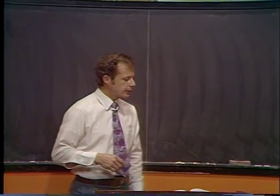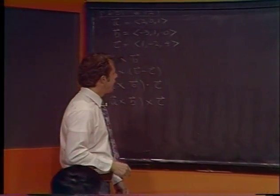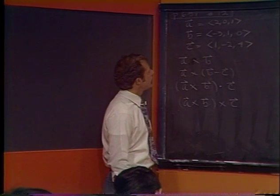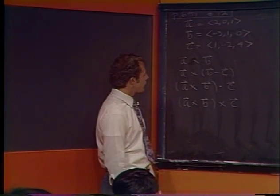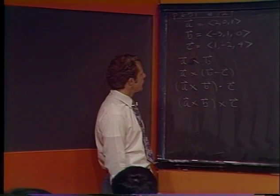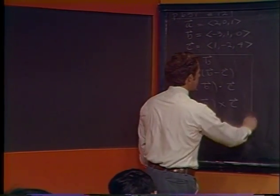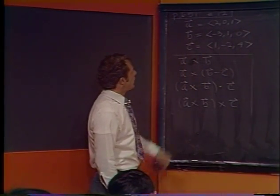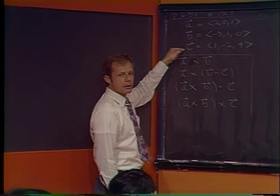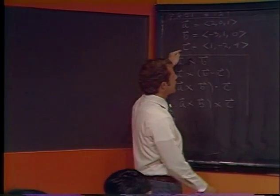Let's take a look at some of the exercises. I picked one from page 651, basically number 12 with a few other ideas thrown in to give a more complete look at what we're trying to do. We have three vectors in three-space. You could try to draw these — let's make an attempt at a couple of them.